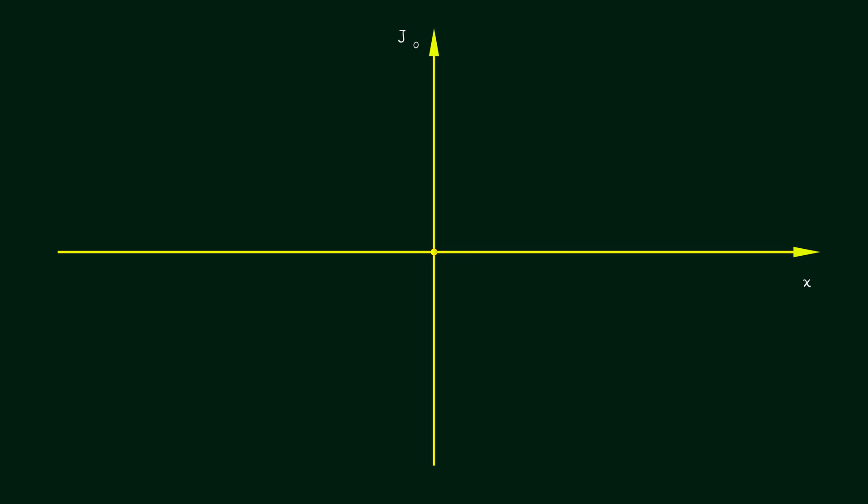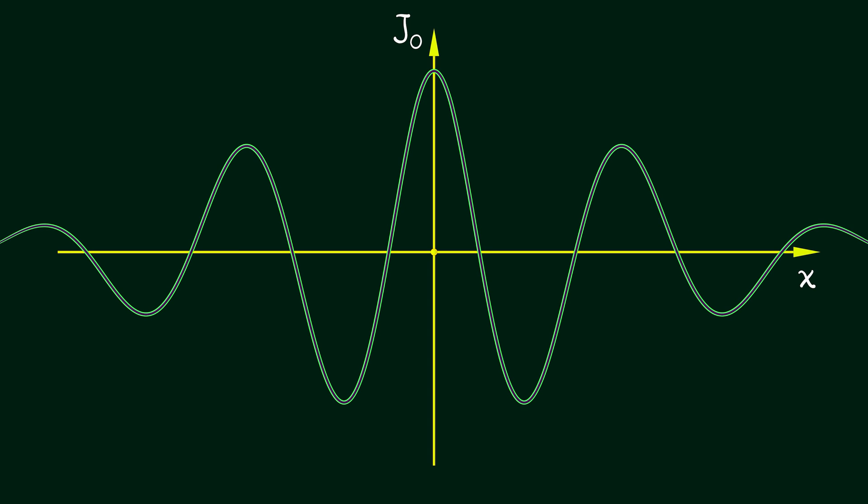Indeed, if we graph this out, we see that this Bessel function J-naught does look like a cosine function, going up and down. But it's not a periodic function like cosine. It's a little bit different, a little interesting.